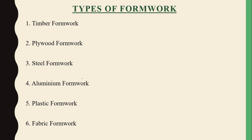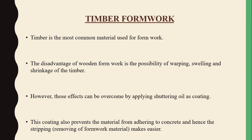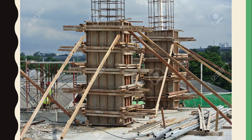There are six types of formwork: timber, plywood, steel, aluminium, plastic, and fabric. First is timber formwork, the most commonly used kind, where wood or timber panels form the mold. The disadvantage of wooden formwork is that warping, swelling, and shrinkage are possible because formwork deals with concrete — presence of water and climatic conditions can affect wooden formwork easily. Advantages include easy availability and low cost.